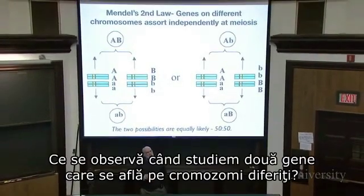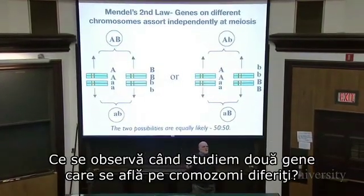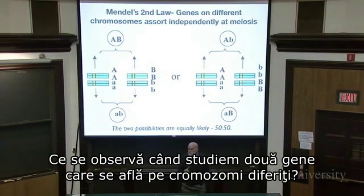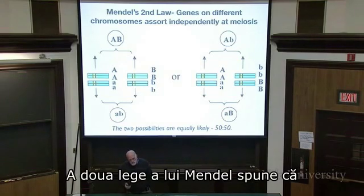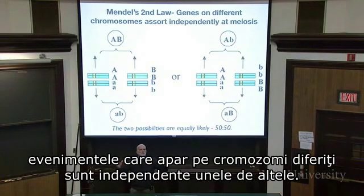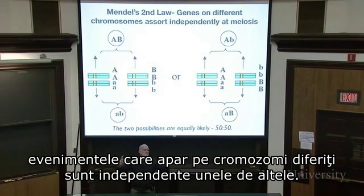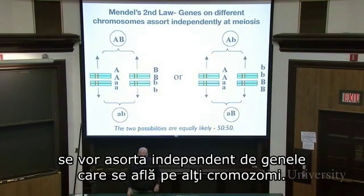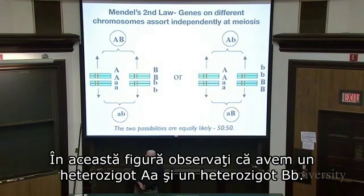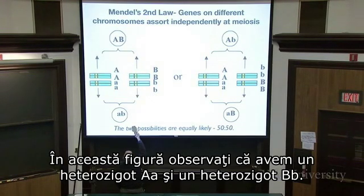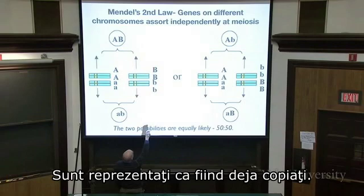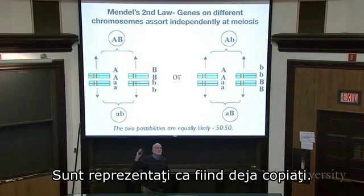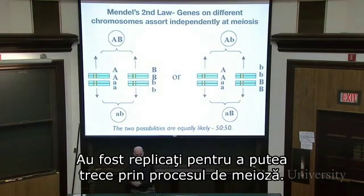Mendel's second law addresses what happens when we're looking at two genes on different chromosomes. Mendel's second law basically says that events occurring at different chromosomes are independent of each other — genes on one chromosome assort independently of genes on other chromosomes. In this picture, we have a big A / little a heterozygote and a big B / little b heterozygote, depicted as already having been copied so they can go through meiosis.